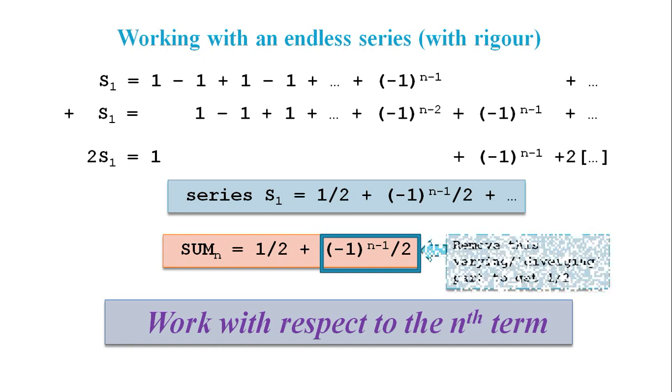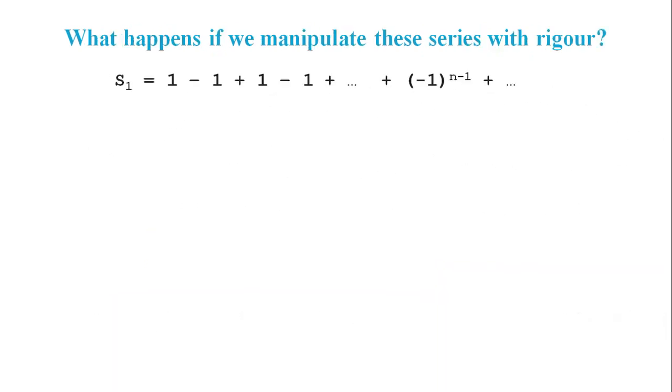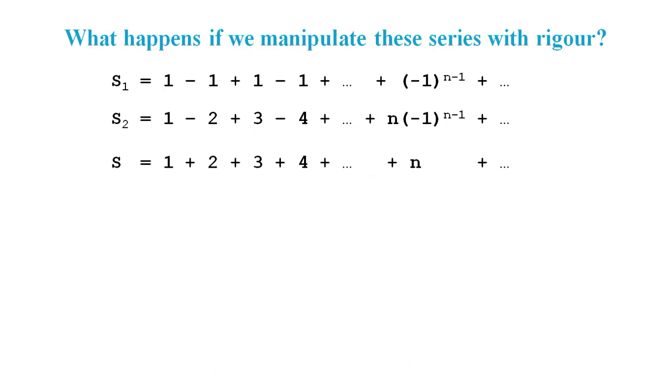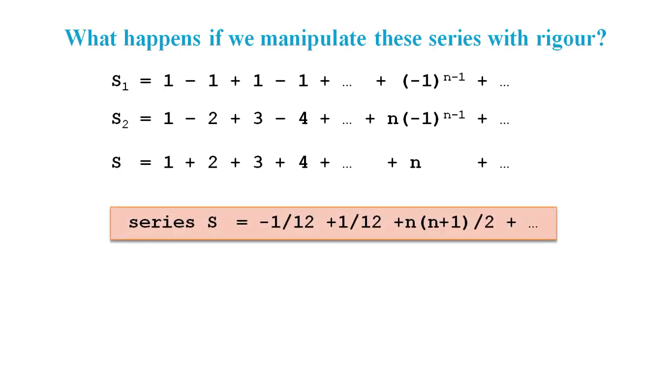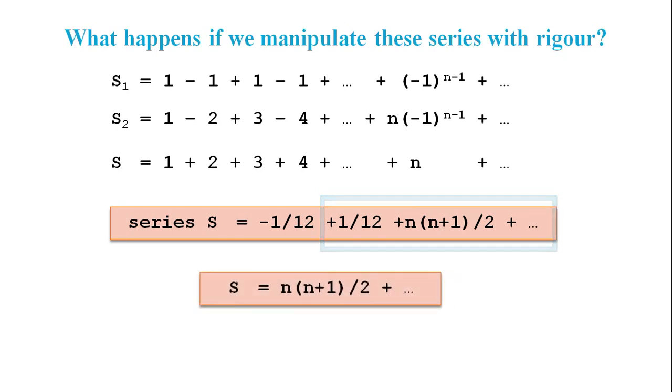So what happens if we use our rigorous approach to do all the manipulations that they used in the astounding results video to get the -1/12 result? If we include an expression for the nth term in each series and then do the same manipulations done in the Numberphile video but with rigor, then we get the series s equals -1/12 plus 1/12 plus n times (n+1) over 2 plus endless terms after the nth term. The informal method dropped these trailing terms, leaving s equals -1/12 as the result. But here the first two terms cancel out, leaving an expression for the partial sum plus endless terms after the nth term.